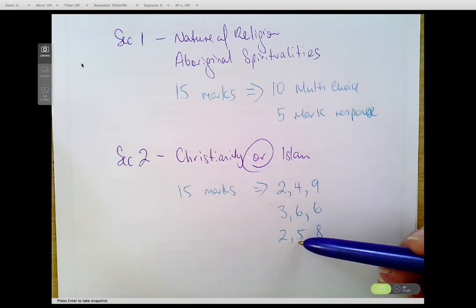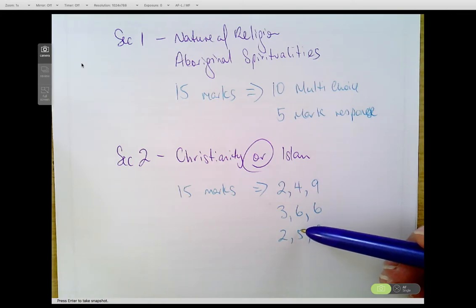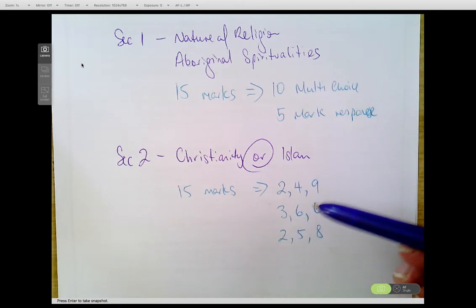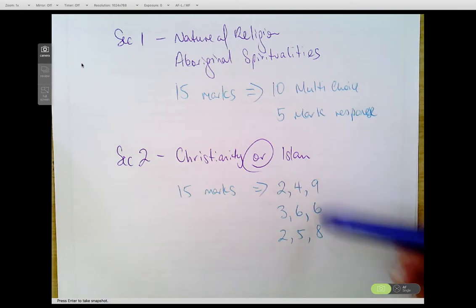Usually the very first question you get is going to be a lower order key verb: a list, an outline. By the time you get into the second part of this section, the second question, which could be 6, 4, 5, or 6, for example, it's more likely that they're going to be a middle order key verb. So that could potentially be an explain, it could be a lower middle order key verb like describe.